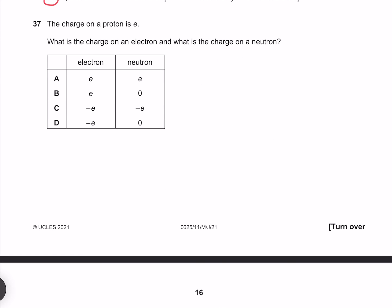The charge on a proton is e. What is the charge on an electron and what is the charge on a neutron? The charge on an electron is opposite to that of a proton or negative e, and the charge on a neutron is 0. So our answer must be D.